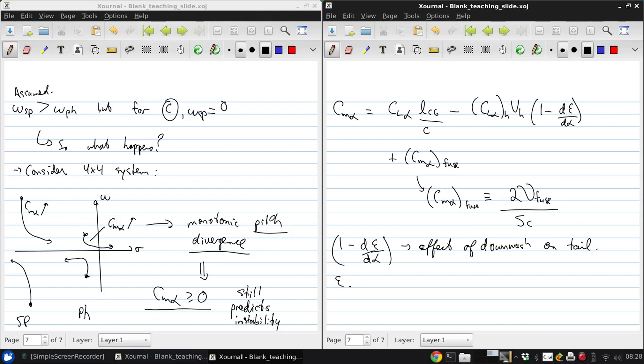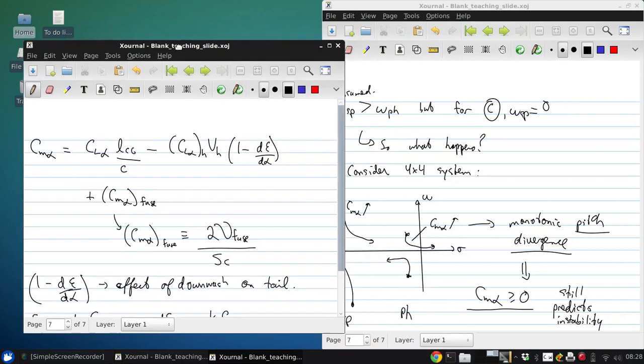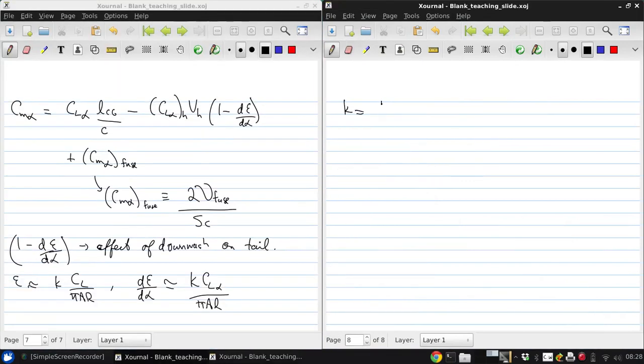And we can estimate this as follows. So ε is approximately K times Cl over πAR. This is for the wing neglecting span efficiency factor. So taking the derivative, dε/dα is K times Clα over πAR. Where this factor K is 1 plus 1 over 1 plus LH over B squared, all times 1 over πLH. And LH is, again, the distance from the wing aerodynamic center to the horizontal tail.